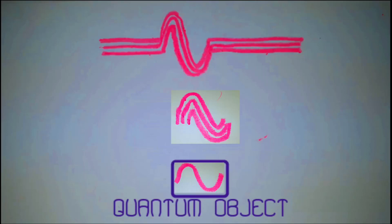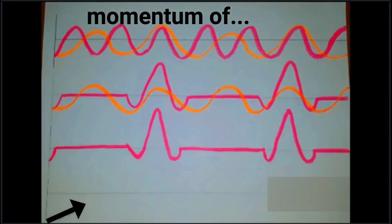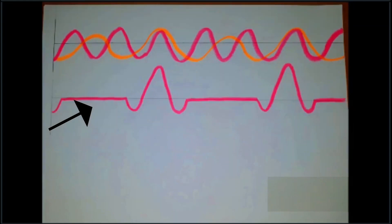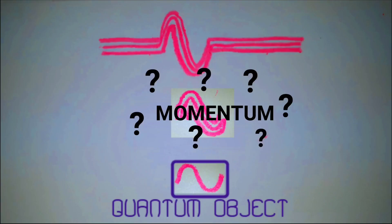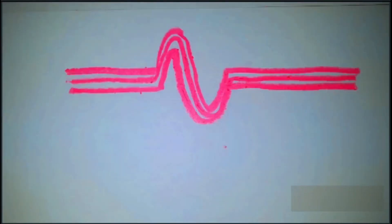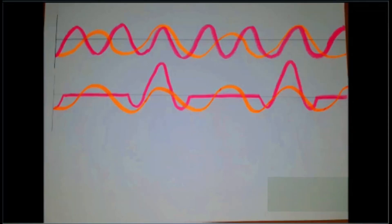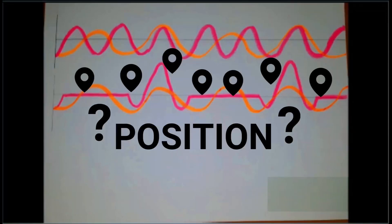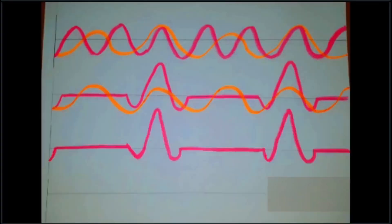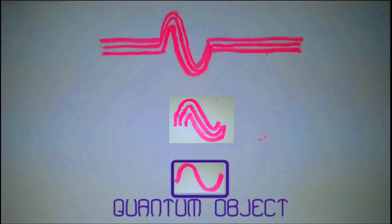Wait a second — the quantum object we created could have momentum of any one of the waves it was made from. So now we aren't sure of its momentum. We can increase the certainty of momentum by adding fewer waves, but that would make the resultant wave larger and we would be uncertain about position. And to increase certainty in position, we have to add more waves, which would make us uncertain about momentum.